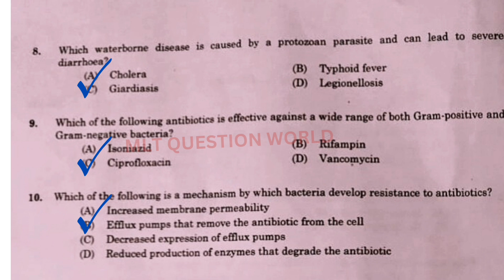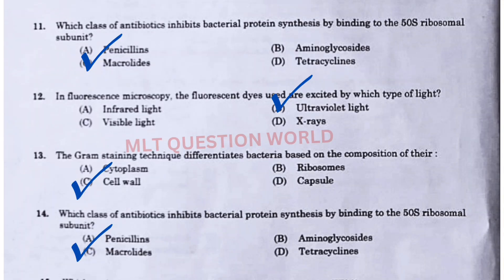Next question: Which of the following is a mechanism by which bacteria develop resistance to antibiotics? The right answer is option B, efflux pumps that remove the antibiotic from the cell. Next question: Which class of antibiotic inhibits bacterial protein synthesis by binding to the 50S ribosomal subunit? The right answer is option C, Macrolides.